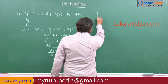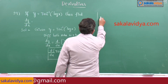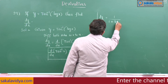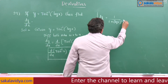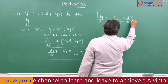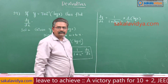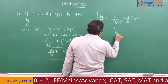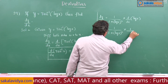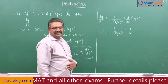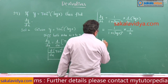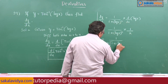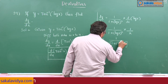So dy by dx becomes 1 by (1 plus (log x) square) into d by dx of log x, which equals 1 by (1 plus (log x) square) into 1 by x. So we get 1 by x times (1 plus (log x) square). This is the final answer.